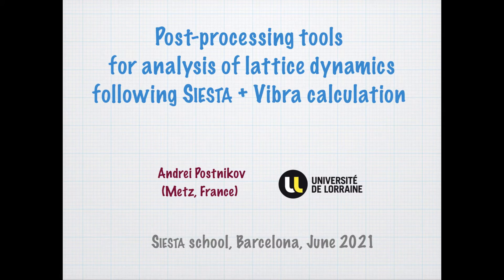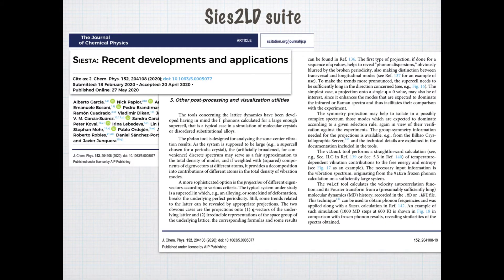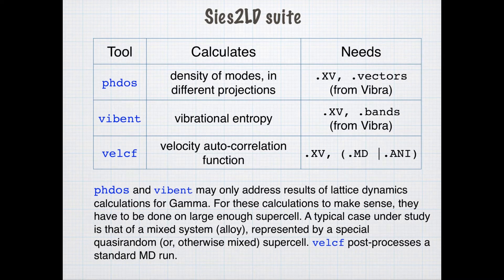We will discuss a set of tools aimed at extracting information related to lattice dynamics and phonons from Siesta calculations and subsequent Vibra calculations. These tools have been mentioned in a recent publication on new Siesta developments in the Journal of Chemical Physics. In the toolkit labeled CS2LD there are three main tools and a short number of technical utilities. The tools we will briefly cover are: PHDOS, for extracting the density of vibration modes and organizing their projection according to different criteria.